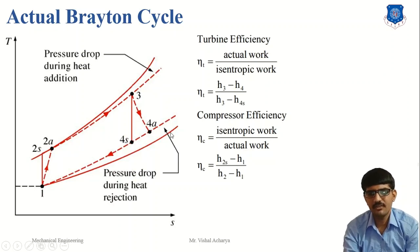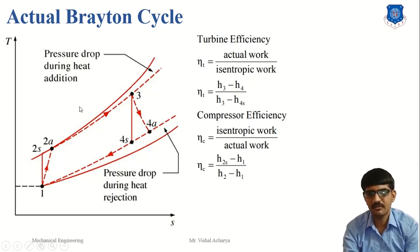In the ideal cycle, we have assumed that our fluid is air. But in actual conditions, the 1-to-2 process involves air being compressed, and in the 2-to-3 process, in the combustion chamber, fuel is added. So the 2-to-3 process involves a mixture of air and fuel where combustion starts. The 3-to-4 process involves hot gases, and the 4-to-1 process is heat rejection of hot gases at lower temperature. In the 2-to-3 process, some pressure drop occurs.